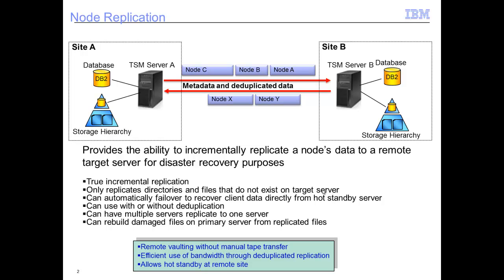Node Replication provides the ability to replicate a node's data to a remote target server. In case your primary TSM server goes down, the data can still be recovered from the secondary TSM server. We have site A which has our primary TSM server that the different nodes are backing up to, and we are going to replicate its data over to site B, our target server. Site A and site B might both be production servers. When replication occurs, it's truly an incremental replication where only the files that haven't been replicated are sent over to the other server. You can choose which nodes, directories, and files are replicated, and if there is a failure on site A, all clients will automatically fail over and start recovering from site B.